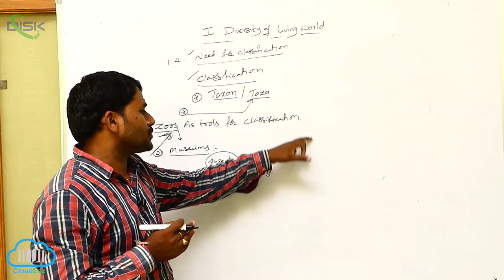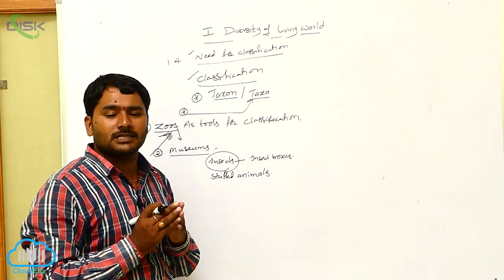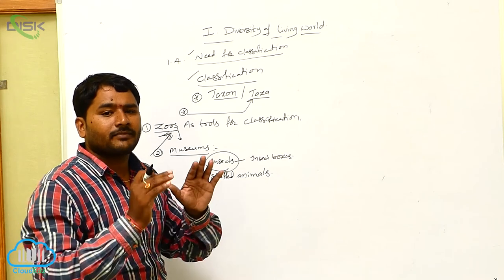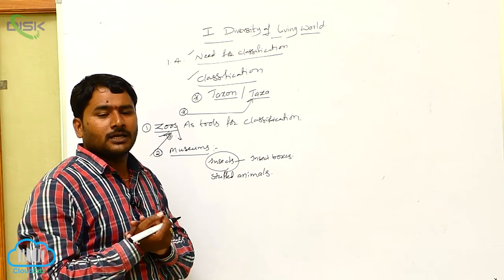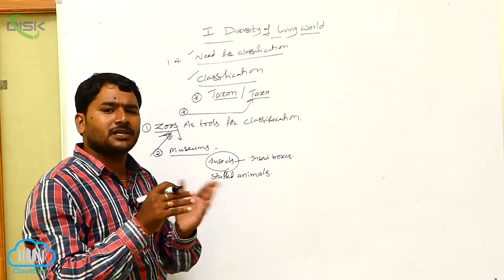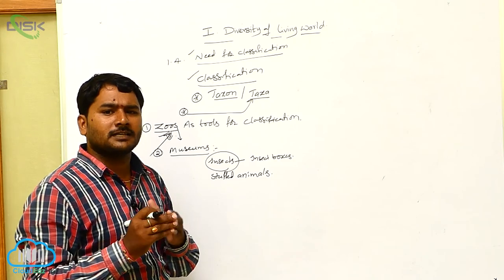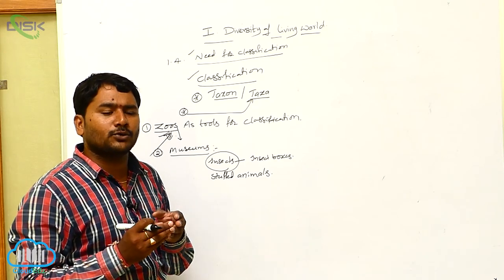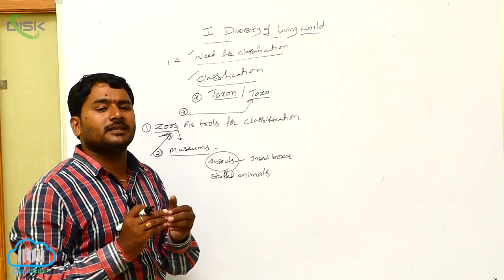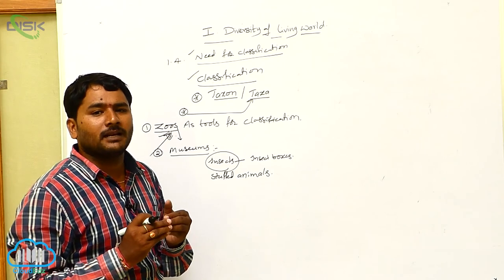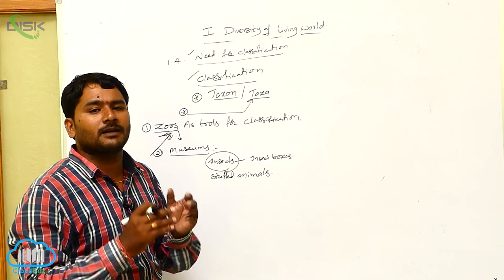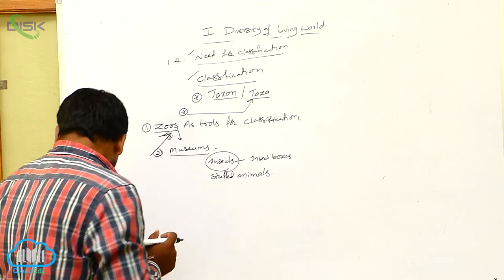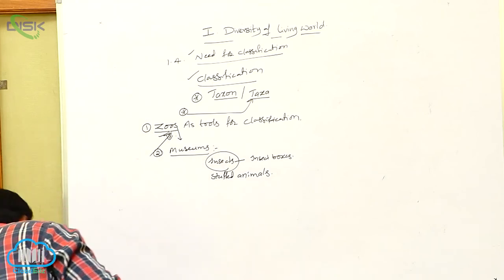These are the two things — zoos and museums — which help us to classify the animals. Classification is a process by which any organism can be divided into a convenient group by simple observable characters. This concludes the need for classification.